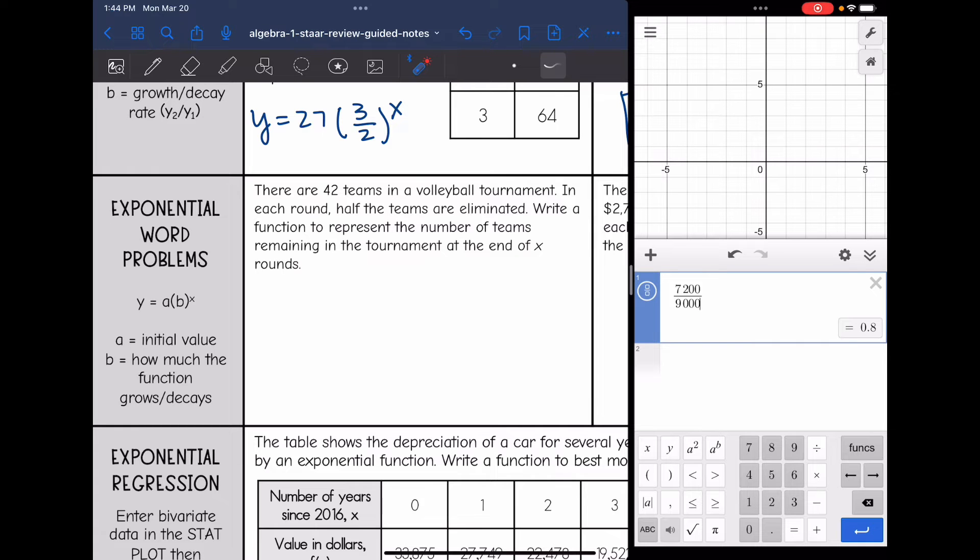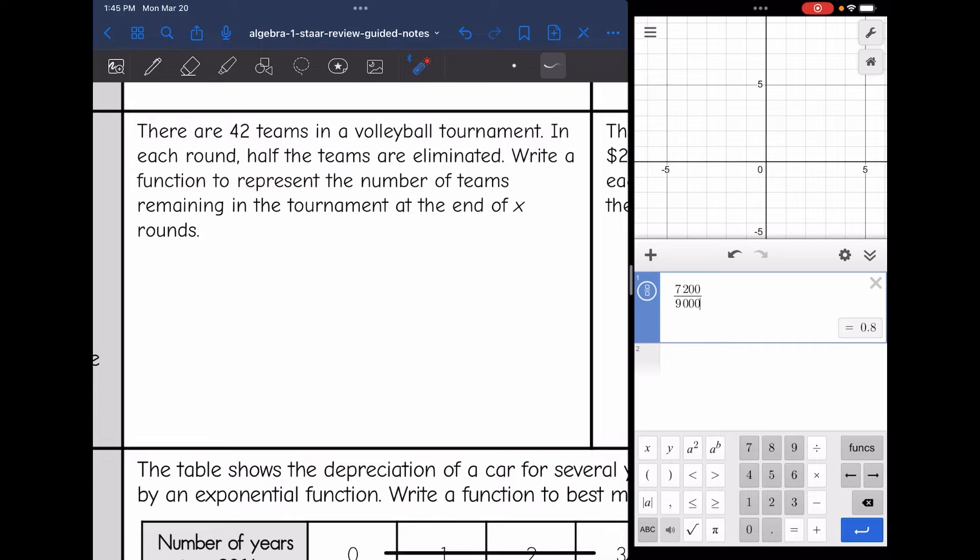This first one says there are 42 teams in a volleyball tournament. In each round, half the teams are eliminated. Write a function to represent the number of teams remaining in the tournament at the end of x rounds. So I can tell that my initial value, my a value is going to be 42. And then half of the teams are eliminated each round. So that means I'm going to have a decay rate of one half. We're just going to keep taking half of the teams. So my function for this one would be y = 42(1/2)^x.